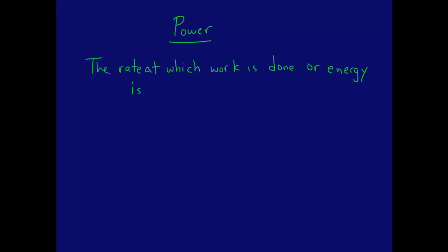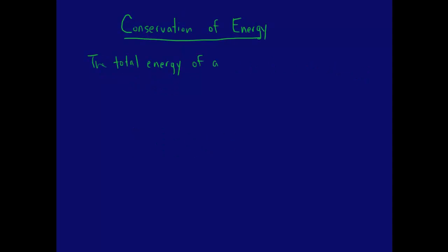Power is the rate at which work is done or energy is used. The equation for power is p equals w over t. This can also be written as fd over t, or f times average velocity. The law of conservation of energy states that the total energy of a system remains constant. Mathematically, the sum of the potential and kinetic energy at some point in time equals the sum at some later point in time.